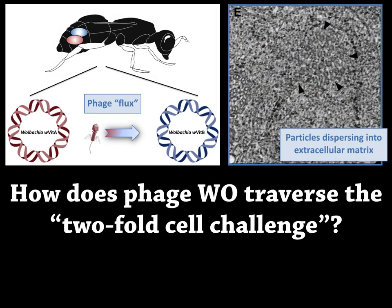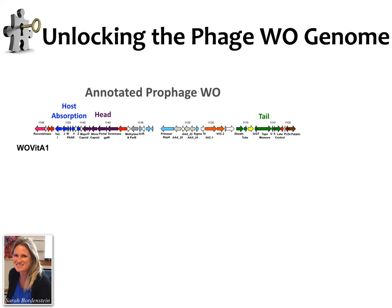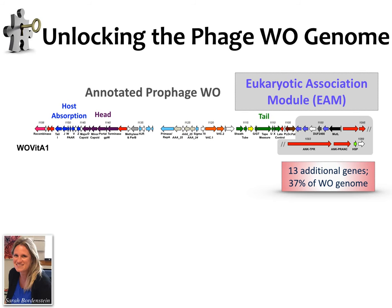Part two gets back to the original question: how does phage WO still do this? How does it actually traverse the two-fold cell challenge? We now know we've got movement and phages dispersing into the eukaryotic environment. We've turned to sequencing the phage particle genomes. Everything we knew about the phage thus far suggested this is a canonical bacteriophage — head genes, base plate genes, tail genes. But what we added with our sequencing effort was a formerly annotated part of the Wolbachia genome that was considered Wolbachia genes — it turns out to be actually part of the bacteriophage particle genomes. Some of the sizes of these genes are rather large — almost the size of a eukaryotic gene.